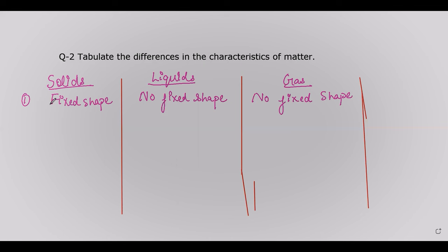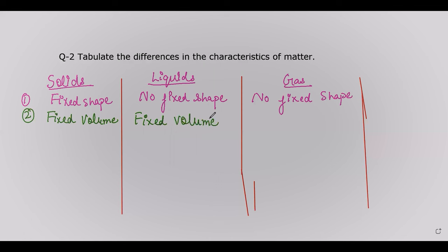For volume: solids have a fixed volume. Liquids also have a fixed volume — if you take 100 ml of water or juice, that volume remains the same; only the shape of the container differs. Gases, however, do not have a fixed volume — gas occupies the spaces inside a cylinder or container.